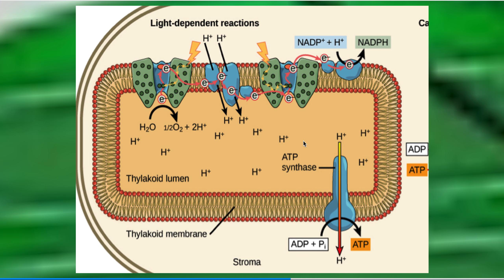They happen across the thylakoid membrane, which is continuous with the inner chloroplast membrane, but it makes these nice little folds and stuff to increase the surface area, of course.